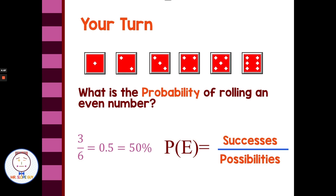I always start probability with the fraction. You should know that 3/6 is equivalent to 0.5 or 50%. The probability of the event is successes versus possibilities. The successes here would be rolling a 2, 4, or 6 — those are the even numbers — over the possibilities: a 1, 2, 3, 4, 5, or 6 could be rolled, giving us six different possibilities.